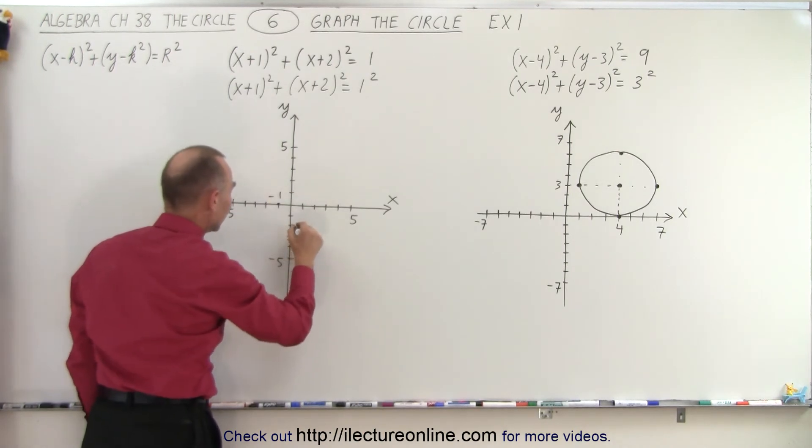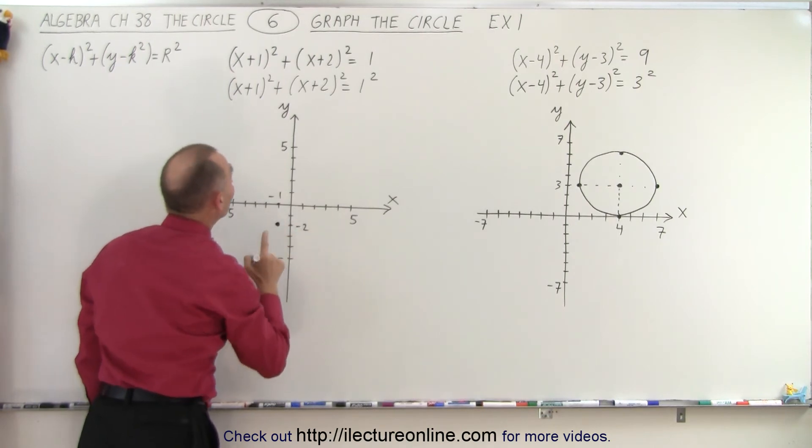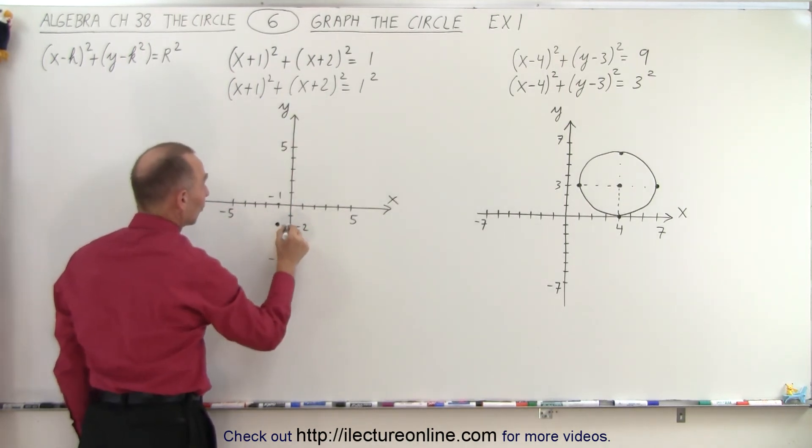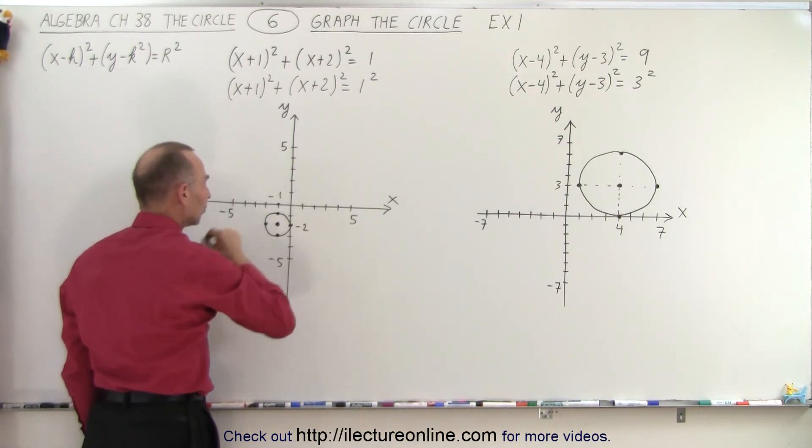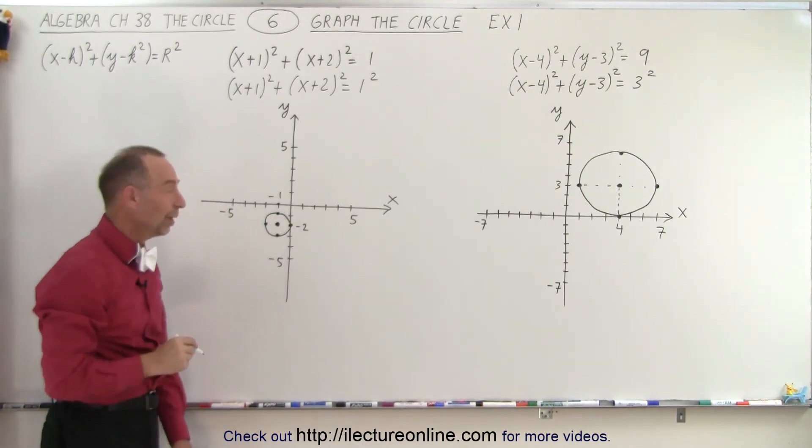So -1, -2, I'll put them over there. So there's the center of the circle. Notice the radius is equal to 1, so we move one point to the right, one point to the left, one point up, one point down. If we connect those in the circle, there we go—a nice little cute circle with radius equal to 1.